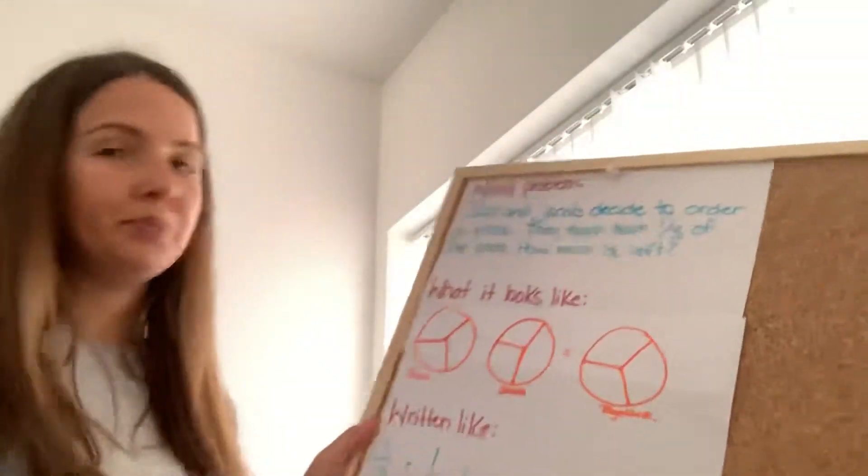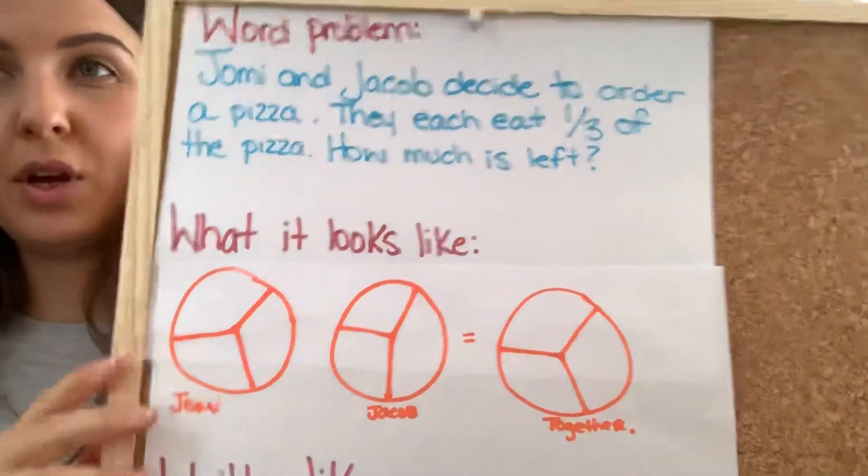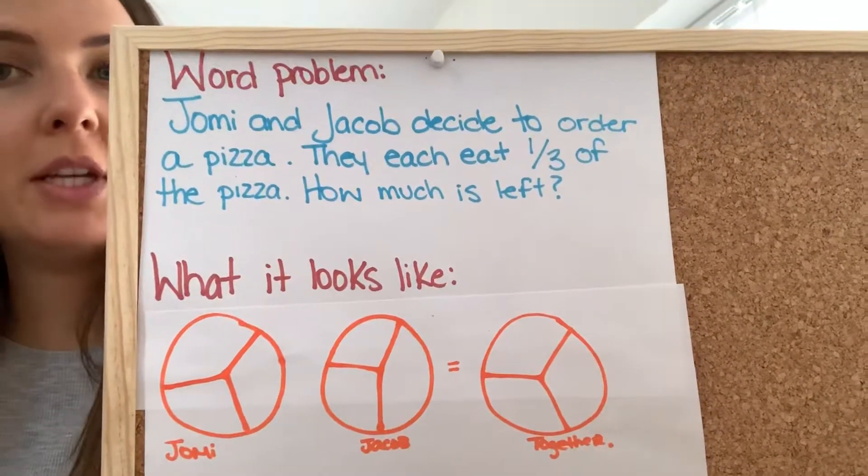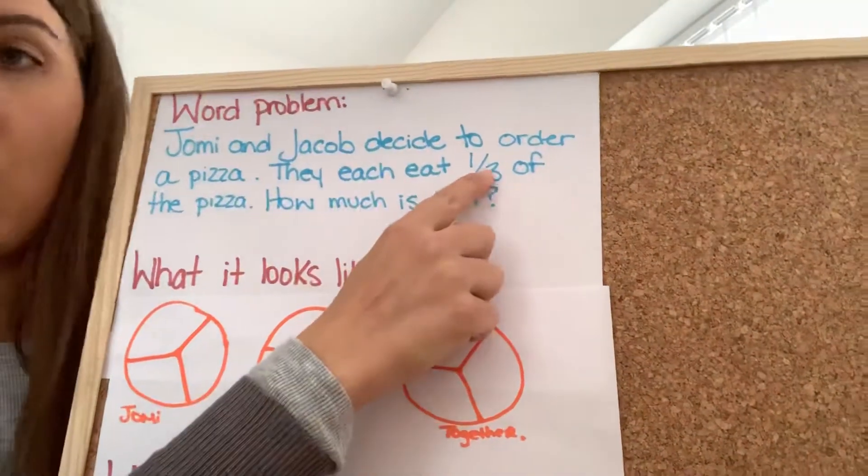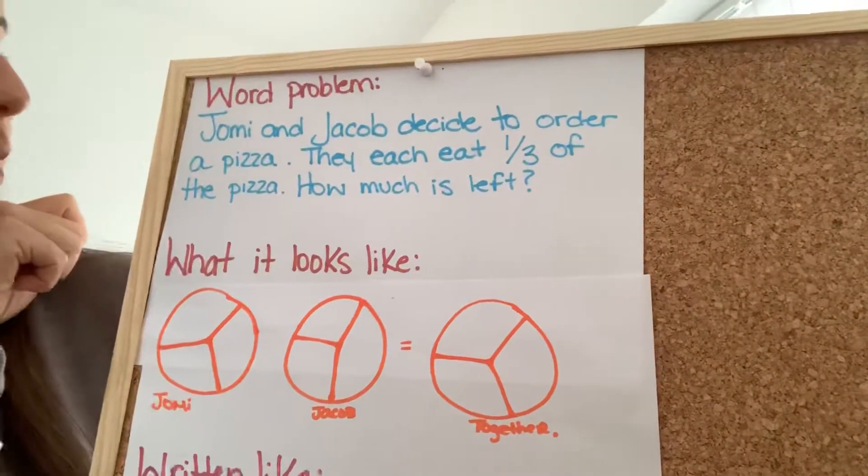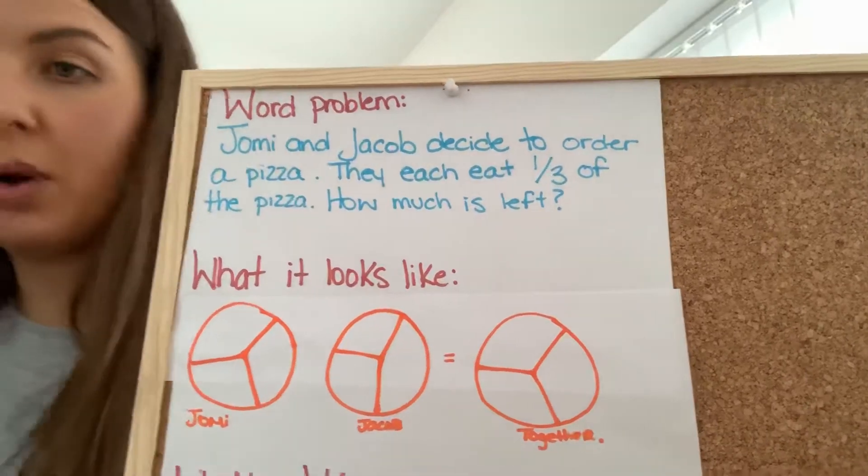Let's try this again. I hope you guys are enjoying this. It's kind of fun for me to do because I miss writing on a chalkboard. All right. So, our next word problem. Jomi and Jacob decide to order a pizza. They each eat one-third of the pizza. So, how much is left?